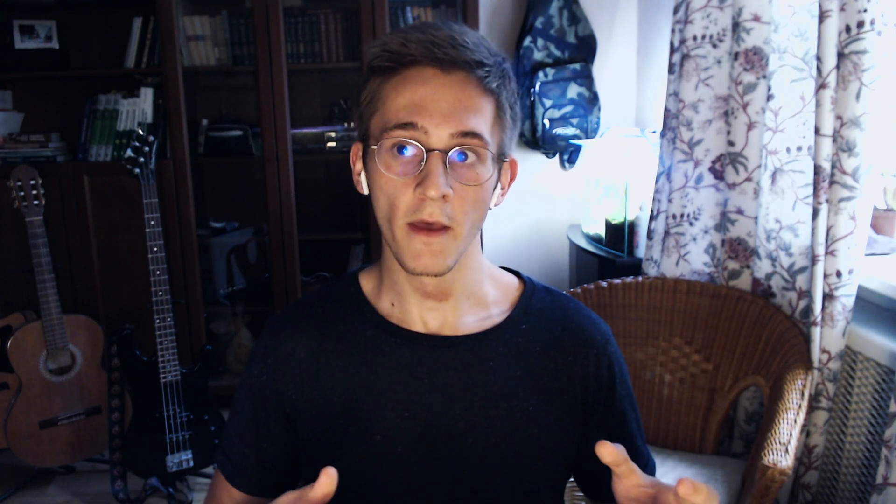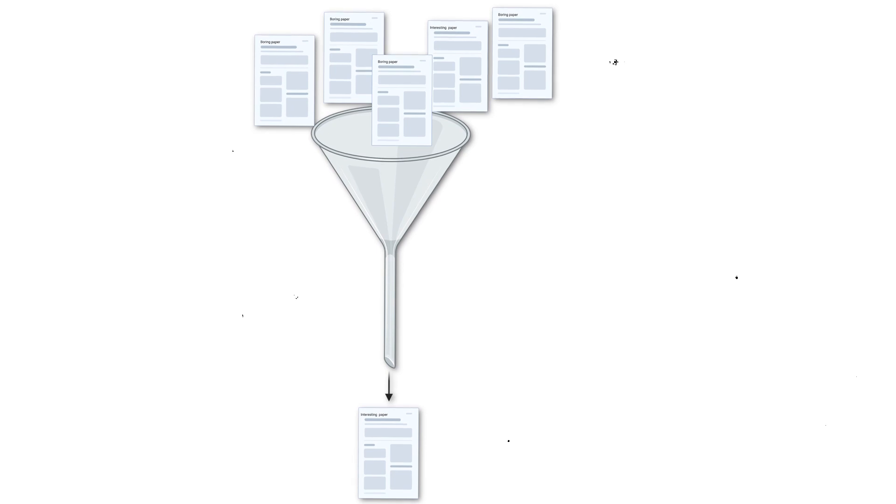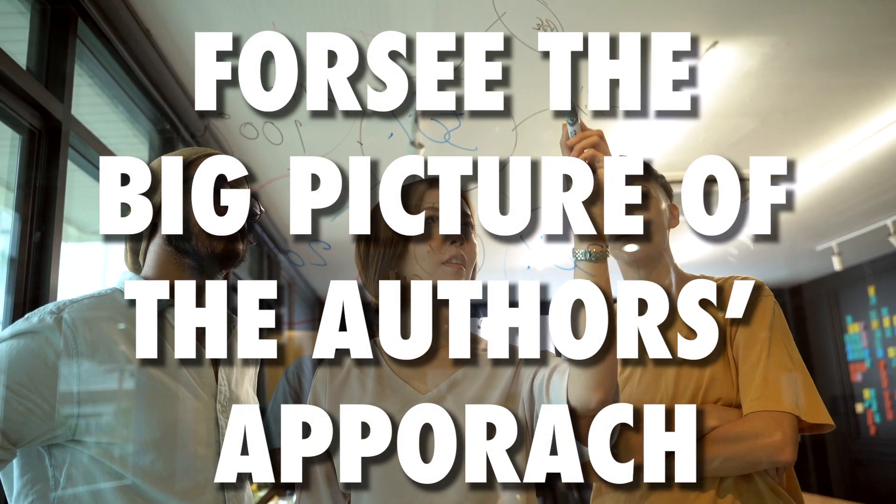Once you have your inner filter set up and a clear goal in mind, it's time to get our hands dirty. First of all, read the abstract, and then skim the discussion and conclusions to make sure whether it's something you really want. If you are indeed intrigued by the results and you think this paper is what you've been looking for, then go ahead and read the introduction and the discussion. If there is something you don't understand in the introduction, don't hesitate to pause and Google it, or even watch a couple of YouTube explainers if the topic is too complex. When you read the conclusion first in this way, try to think about how you would personally go about reaching that conclusion on your own, trying to foresee the big picture of the author's approach.